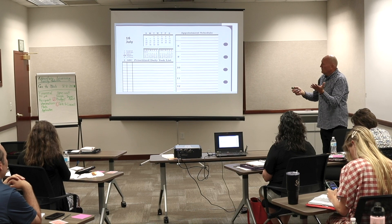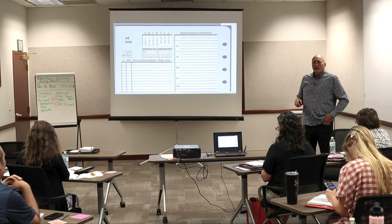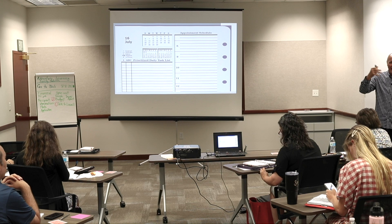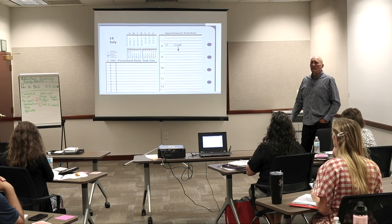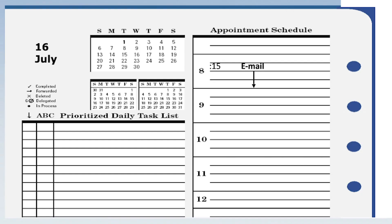Here's today's date on the left-hand page of my Franklin planner. I have the appointment schedule and the prioritized daily task list. When planning out today — this is just an example — I'm going to check email, which normally takes about 45 minutes. Since I didn't get a chance yesterday, I'm giving myself a little extra time: 8:15 to 9:00. We have a communication plan team meeting from 10 to 11.